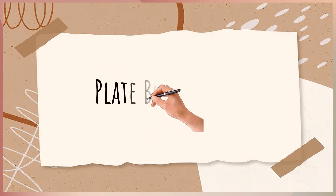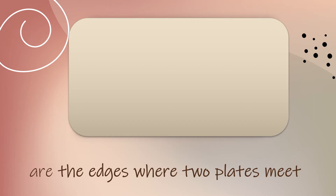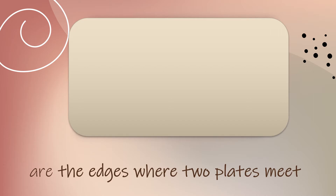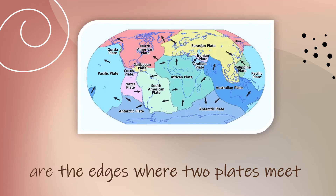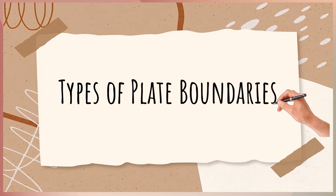Our topic is all about plate boundaries. Plate boundaries are the edges where two plates meet. This is the map showing the relative motion of plates. Arrows indicate the direction of motion. There are three types of plate boundaries, and it depends on how the plates move relative to each other.